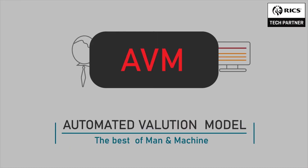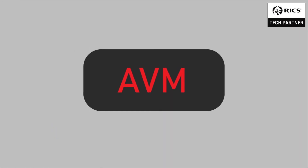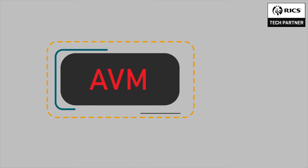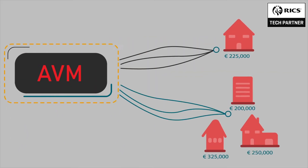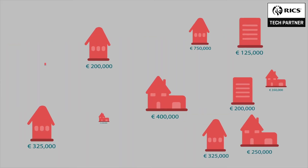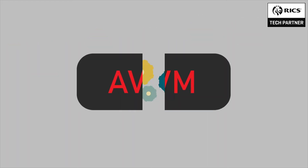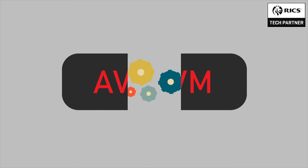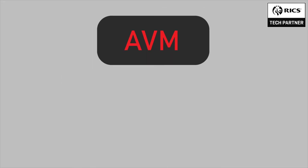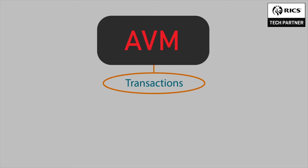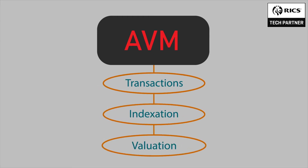AVM, or an Automated Valuation Model, is a tool valuers develop to accurately, quickly, and frequently determine the market value of a complete portfolio of residential properties. Most AVM models consist of three main pillars: transactions, indexation, and valuation.